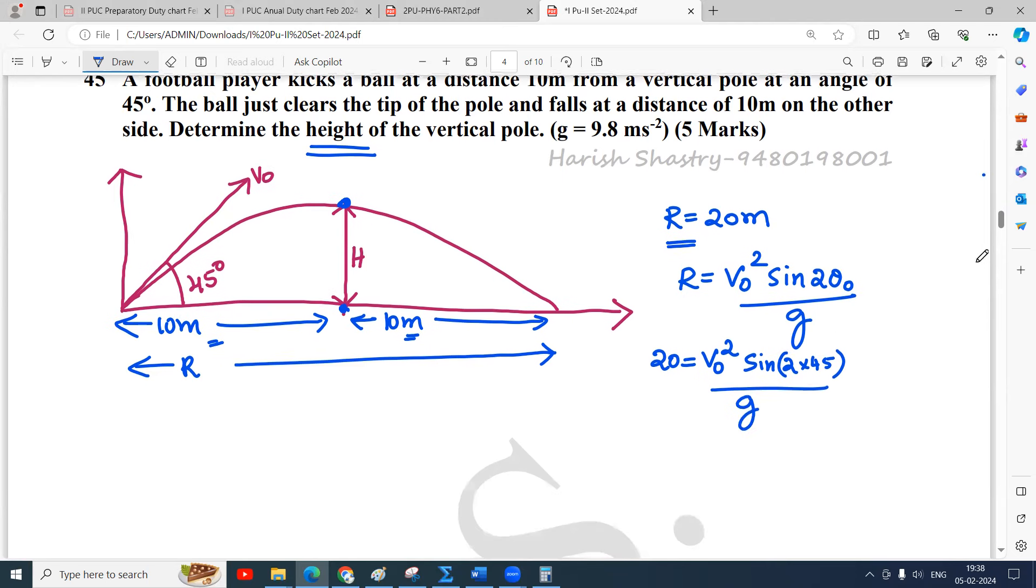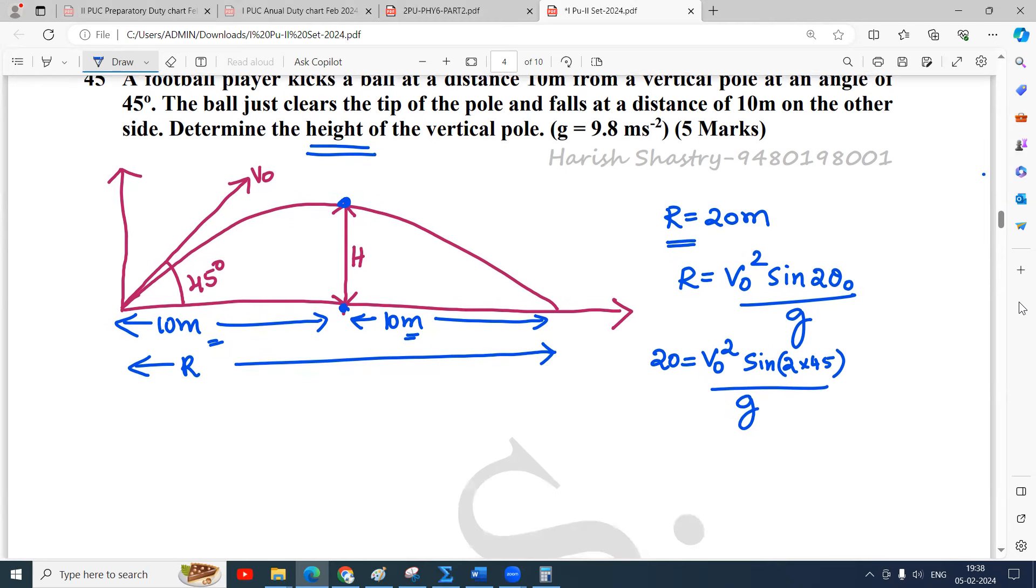So 20 equals V₀² divided by g, since sin(90°) is 1. Now let us use this to find the maximum height, because we know the formula for maximum height.